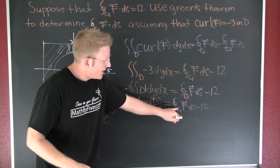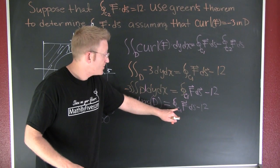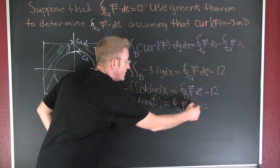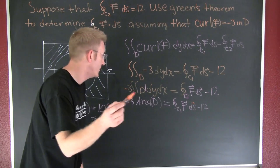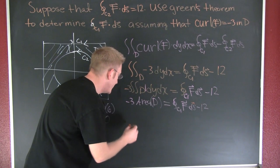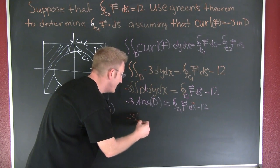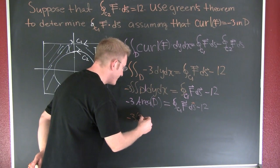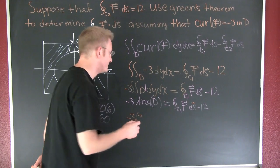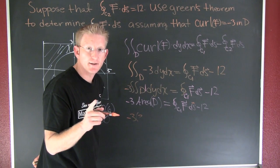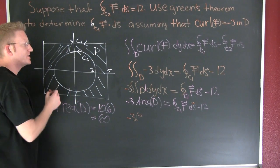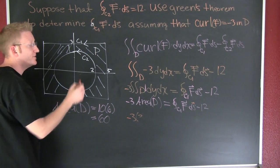So I can put that right there and I can find my integral around the closed path C1 of the field dotted with the differential of arc length. I'll find that this is minus 3 times my area of D, which was 60. There's more to my area, isn't there? If I'm back over here, this is the area of the entire thing. We want the area of D.